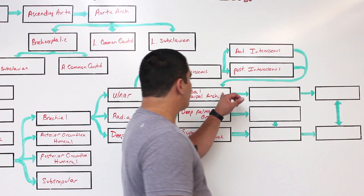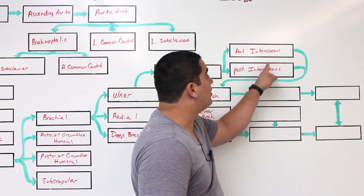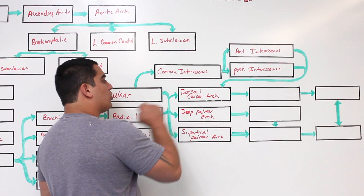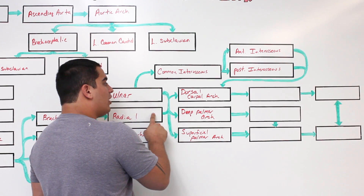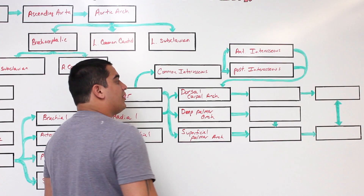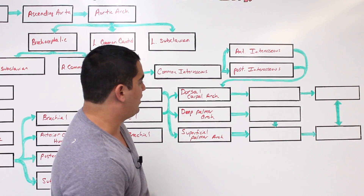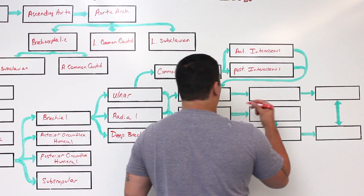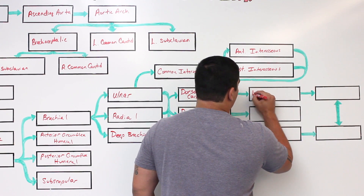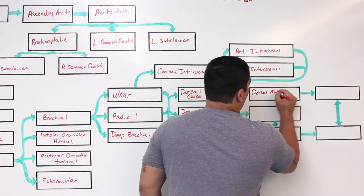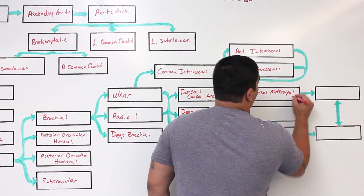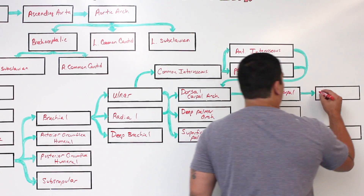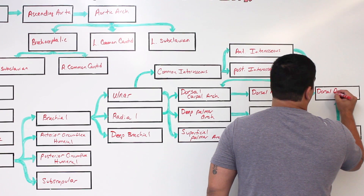The dorsal carpal arch is also going to get blood from the anterior and posterior interosseous arteries through an anastomosis connection. So the dorsal carpal arch is getting three vessels feeding into it: ulnar and radial branches, and the anterior and posterior interosseous branches. The dorsal carpal arch then gives off what's called dorsal metacarpal arteries. Then from the metacarpal arteries, it branches out into dorsal digital arteries that go to the fingers.